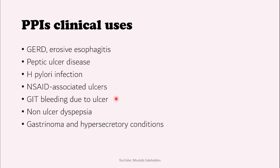PPIs are used in GI bleeding due to ulcer, given at high doses — around 40 mg omeprazole twice daily or as a continuous intravenous infusion — to raise stomach pH, enhance coagulation, and promote ulcer healing. They are also used for non-ulcer dyspepsia, and for gastrinomas and other hypersecretory conditions, where high acid secretion leads to peptic ulceration. High doses of PPIs are effective in decreasing acid and protecting the stomach and esophagus in these conditions.